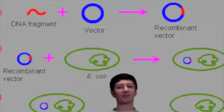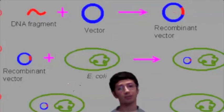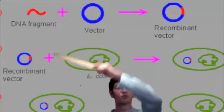DNA cloning is a technique used to reproduce DNA fragments. It can be achieved by two different approaches. The first approach is cell-based, while the second is using polymerase chain reaction, also known as PCR. In the cell-based approach, what we have is a vector. The vector is carrying the DNA fragment, so it is called the recombinant vector, into the host cell.